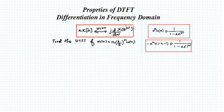We will see how to solve a question using the differentiation property. The signal is: find the DTFT of x1(n) = n·(4/5)^n·u(n).